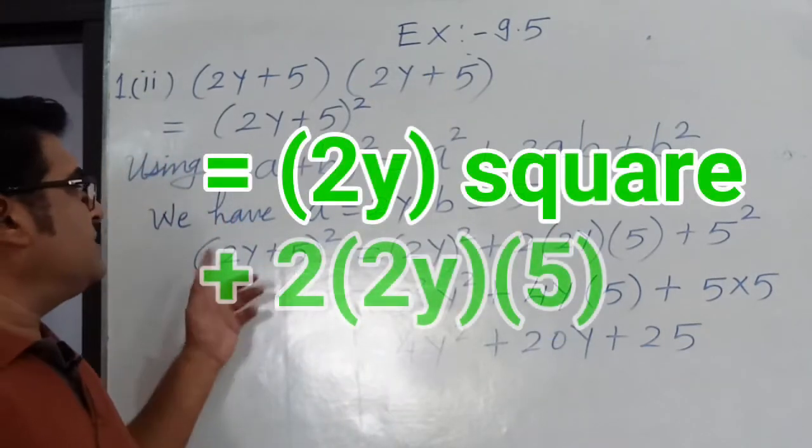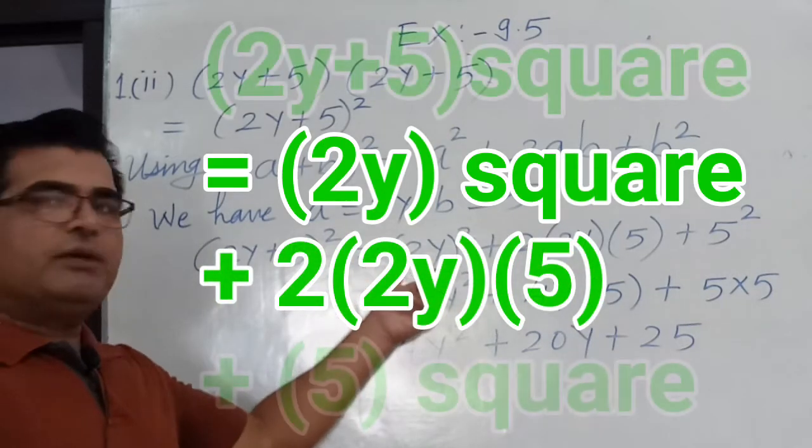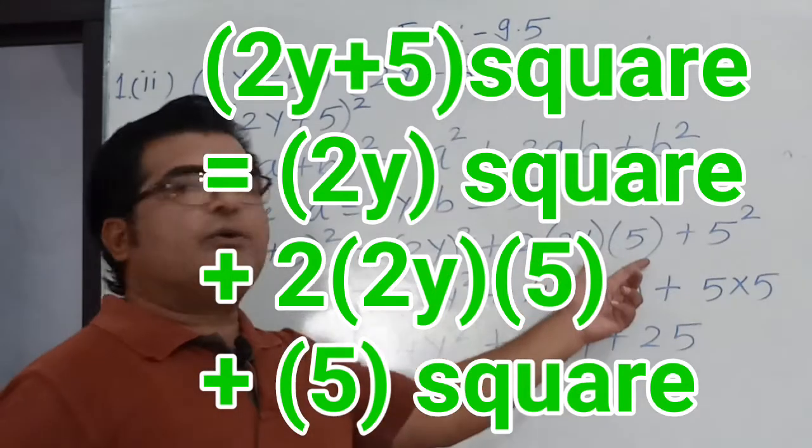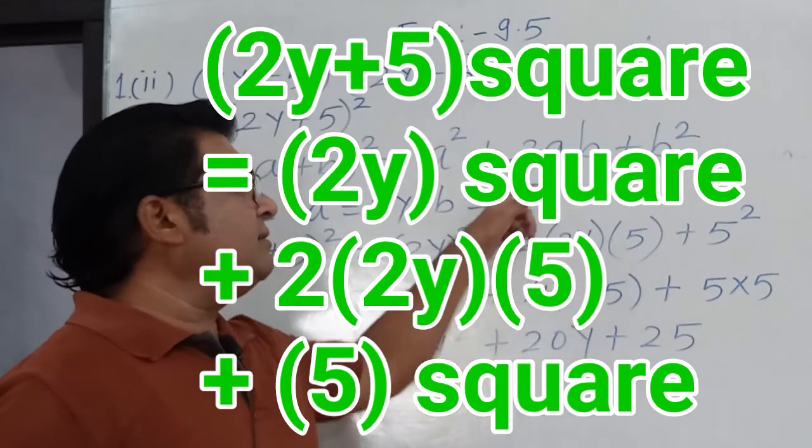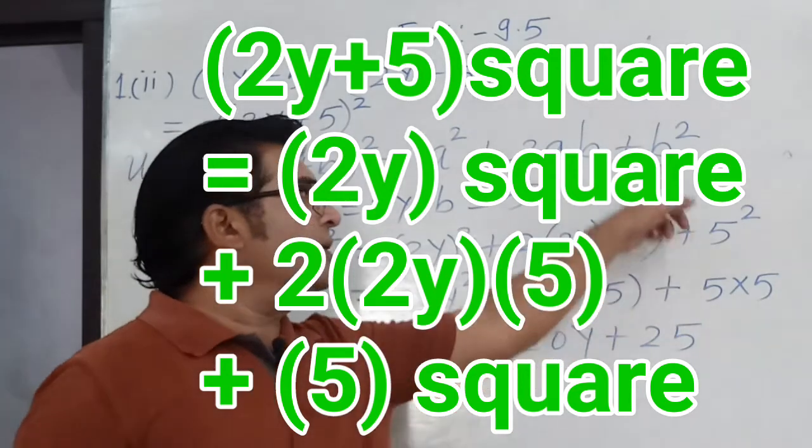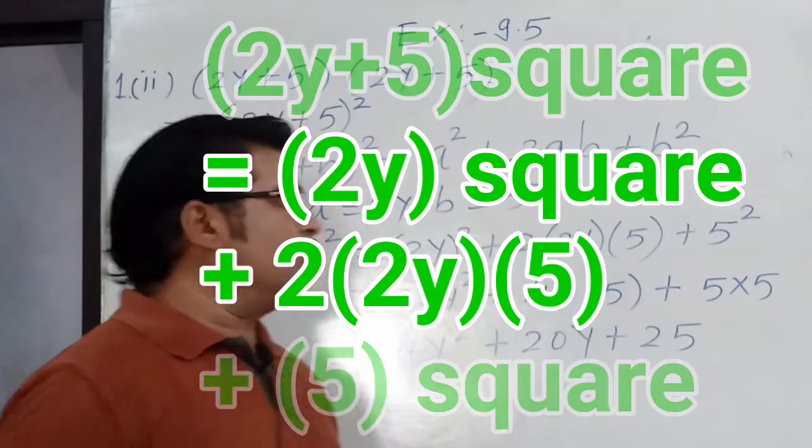Now the next step is 2y plus 5 the whole square equals to 2y the whole square plus 2 into 2y into 5. 2 is necessary because it is present in the identity. 2 into 2y into 5 plus b square, so it is 5 square.